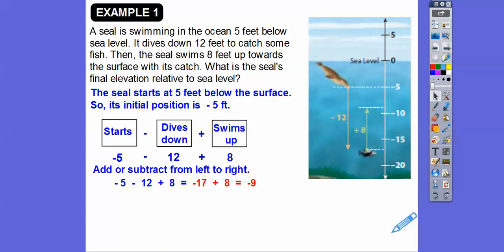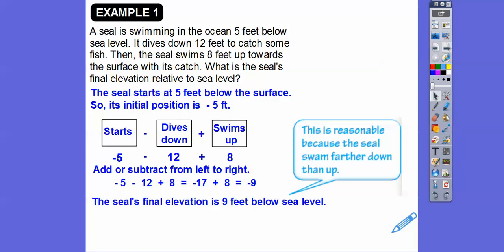Answer the question, you guys. Negative 9 what? It represents the seal's final elevation is 9 feet below sea level. That's a reasonable answer because the seal swam farther down. It went down 12 feet and then it came back up only 8 feet.